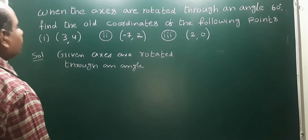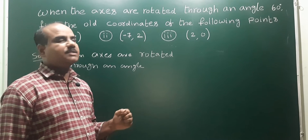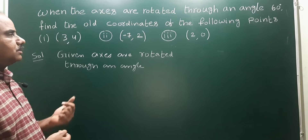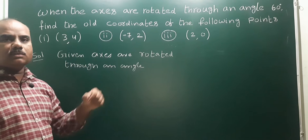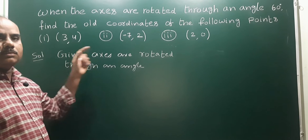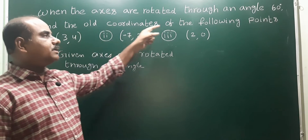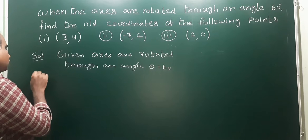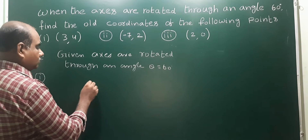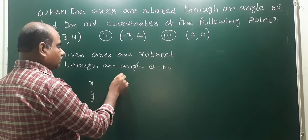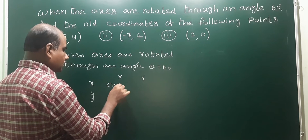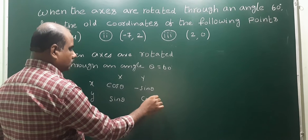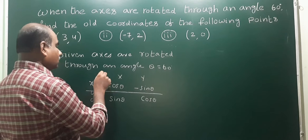Next problem: when the axes are rotated through an angle of 60 degrees, find the old coordinates of the following points. The angle is 60 degrees. We use a table to find old and new coordinates. The table is: cos theta, minus sine theta, sine theta, cos theta. We use this table to find old or new coordinates.